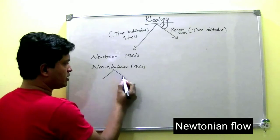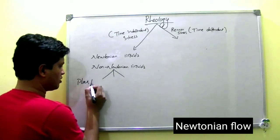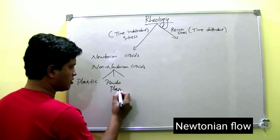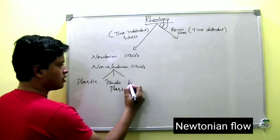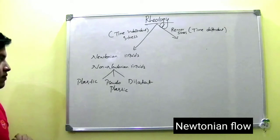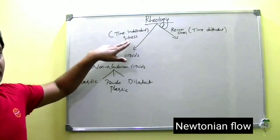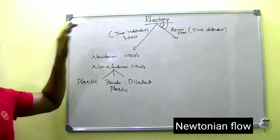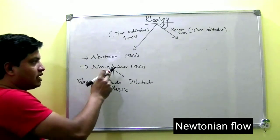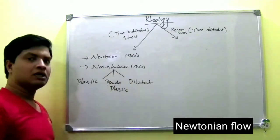Non-Newtonian liquids are classified into three types: plastic, pseudoplastic, and dilatant flow.